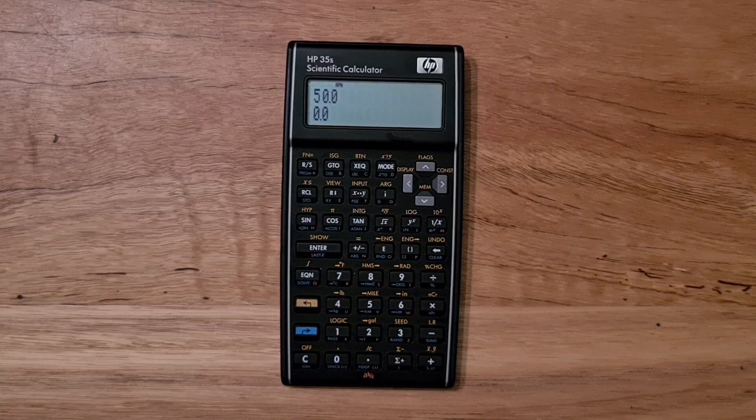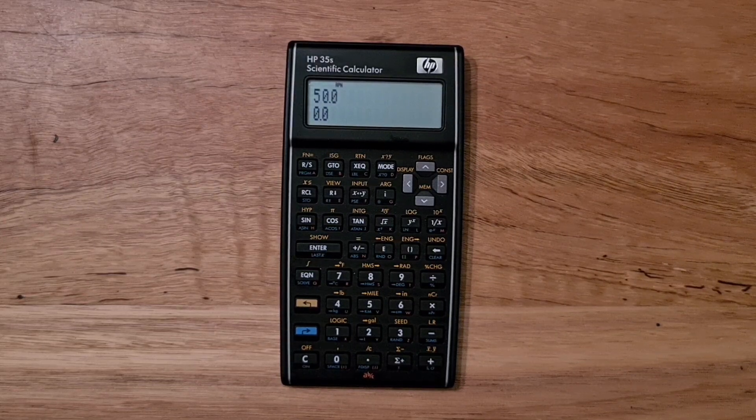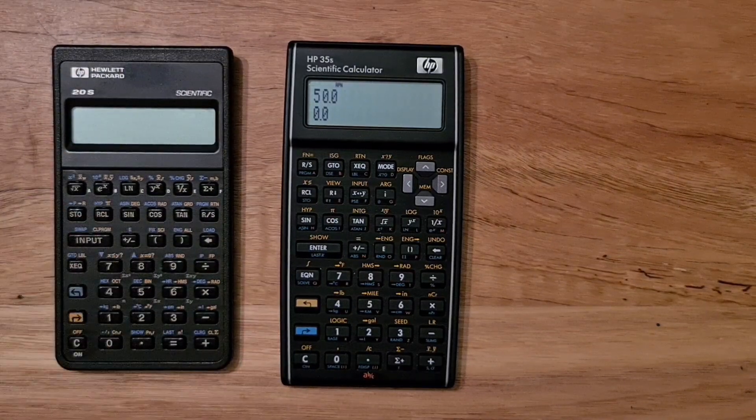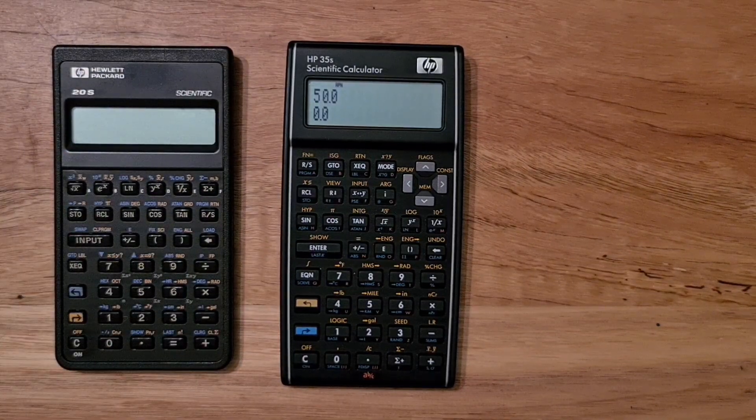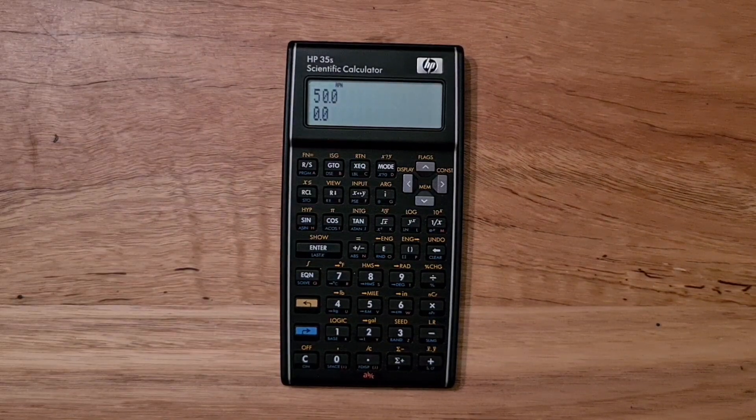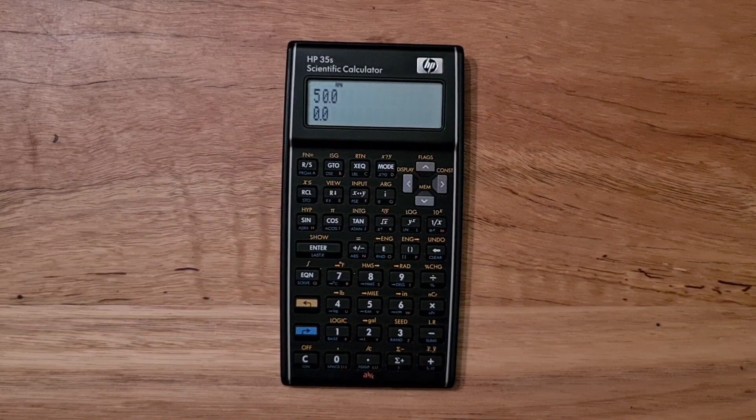The HP-35S is not particularly compact. It's slightly larger than, say, a Pioneer series calculator, but it is only 125 grams, so it's considerably lighter than some of HP's older models.